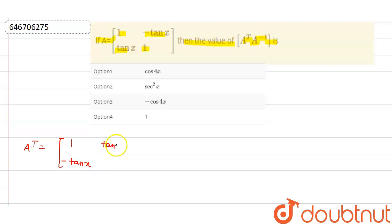And this is what tan x and we have what 1. So A inverse is basically what? A inverse is equal to what? Adjoint of A upon determinant of A.